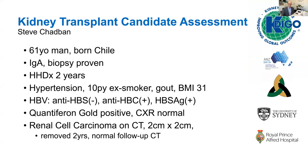The patient I'd like to speak on is a 61-year-old man born in Chile who had IgA nephropathy, biopsy proven, as the cause of his end-stage kidney disease, for which he had received hemodialysis for two years. He also had comorbidities of hypertension, a 10-pack-year history of smoking prior to quitting five years ago, gout, and a BMI of 31. He had evidence of natural immunity to hepatitis B. He was QuantiFERON-Gold positive with a normal chest x-ray, and at the time of commencement of dialysis was found to have an incidental renal cell carcinoma two centimeters in diameter, which was found and resected following initiation of dialysis.